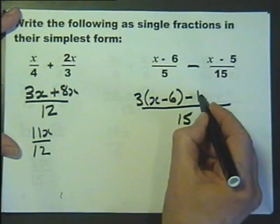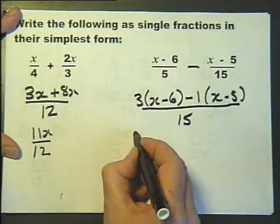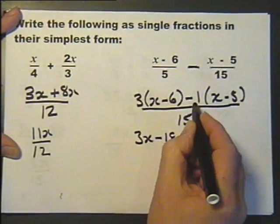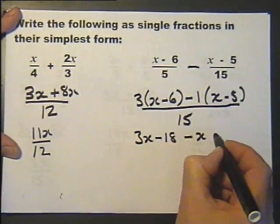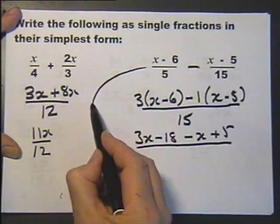So it's actually minus 1 has got to be multiplied by both of those terms. So here I've got 3x, minus 18, minus 1x, plus 5.